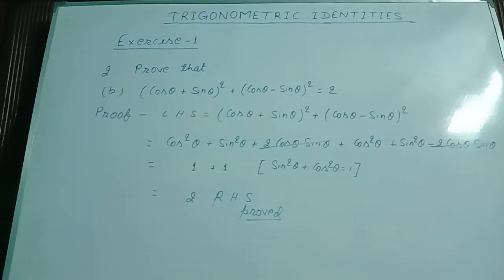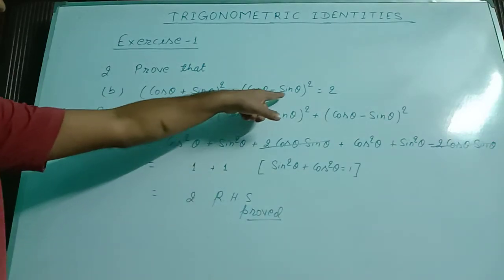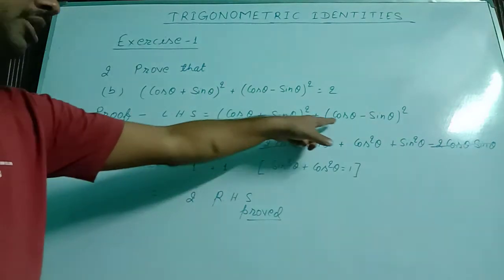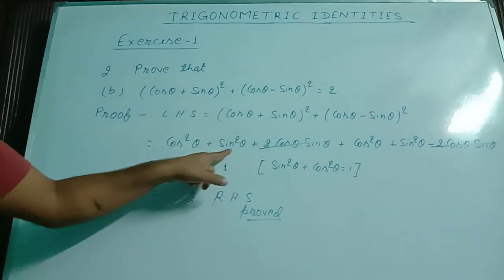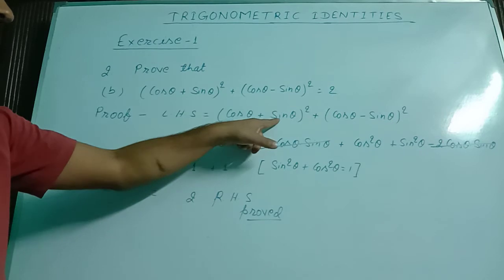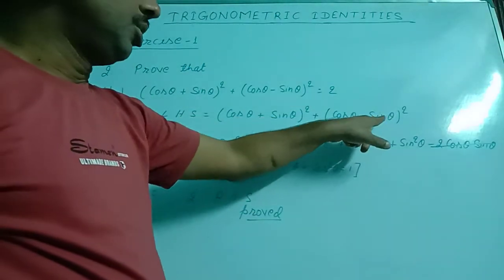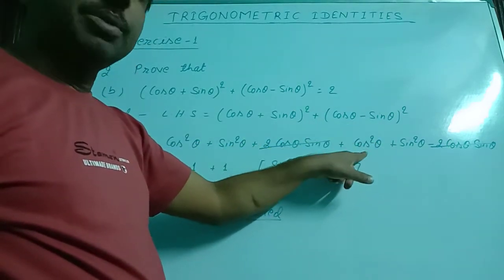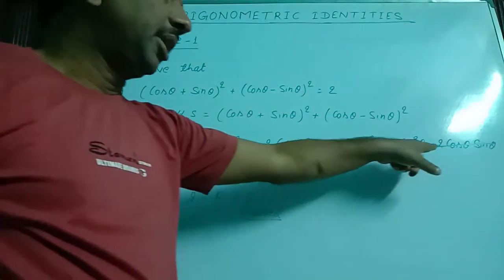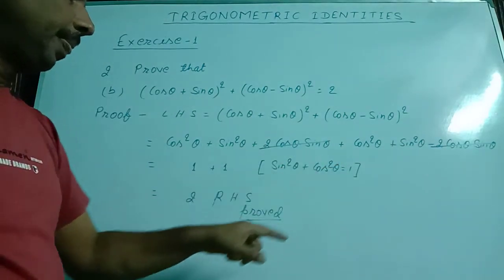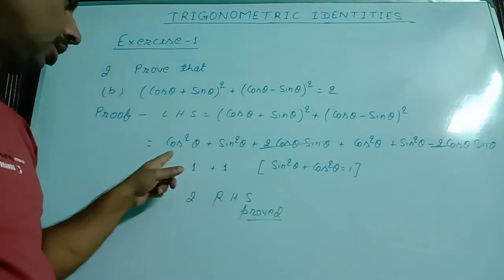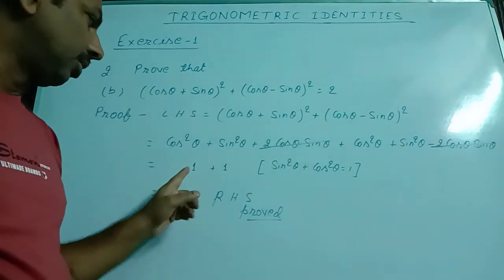Question number 2: prove that cos theta plus sin theta whole square plus cos theta minus sin theta whole square equal to 2. LHS is cos theta plus sin theta whole square plus cos theta minus sin theta whole square. The first term is in the form of a plus b whole square and the second is in the form of a minus b whole square. Expanding: cos square theta plus sin square theta plus 2 cos theta sin theta, plus cos square theta plus sin square theta minus 2 cos theta sin theta. The plus 2 cos theta sin theta and minus 2 cos theta sin theta cancel. Each group cos square theta plus sin square theta equals 1, so 1 plus 1 equals 2 — that is RHS, proved.